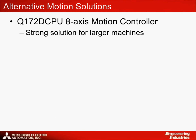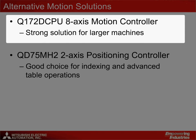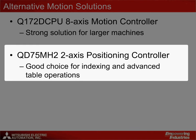Alternative motion solutions available from Mitsubishi Electric include the Q172-DCPU and the QD75-MH2 controllers. The Q172-DCPU can be used for controlling up to eight servo axes, offering a strong solution for larger machines that require full access to rack-based iQ series modules. The QD75-MH2 two-axis positioning controller can be used for much simpler wrapping applications where encoder following isn't absolutely necessary. This controller offers point table programming with up to 600 points per table and takes full advantage of the SSCNET 3 servo system controller network.